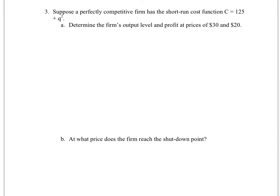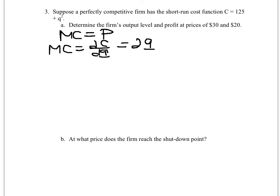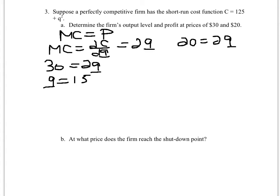This next one is a little easier. You're given a cost function of 125 + q². Determine output at prices of 30 and 20. Since marginal cost equals price for a perfectly competitive firm, and MC is the derivative of cost = 2q: at price 30, 30 = 2q so q = 15; at price 20, 20 = 2q so q = 10.